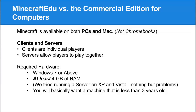There are three types of Minecraft you may use in libraries: Minecraft Edu — a special educational version; the commercial edition; and the Pocket Edition for tablets and smartphones. Minecraft is available on PC and Mac, but not Chromebooks. When running a multiplayer setup, clients are individual players that join a server, and servers allow multiple players to play together. For running a server at Westbury, we found you need Windows 7 or above, at least 4GB of RAM, and generally a machine less than three years old — older computers caused nothing but problems.